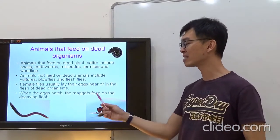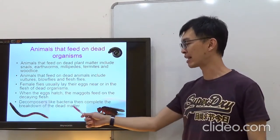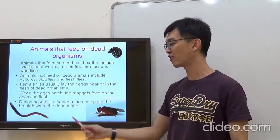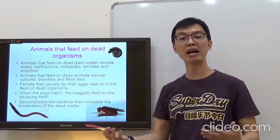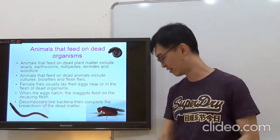When the eggs hatch, the maggots feed on the decaying flesh. Decomposers like bacteria then complete the breakdown of the dead matter. Bacteria and fungi help to speed it up, and then they will help to break them down completely.